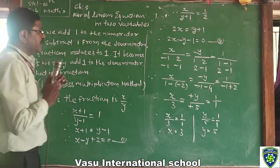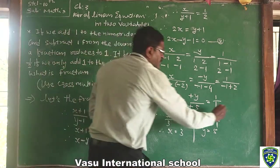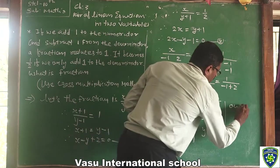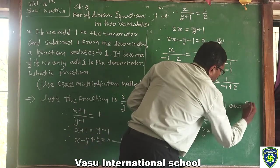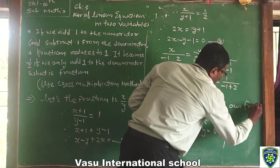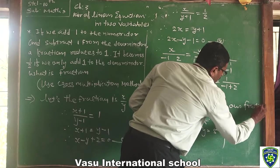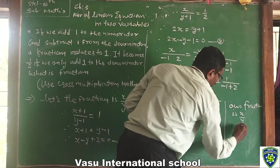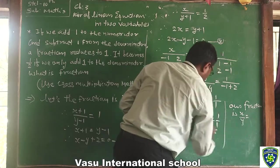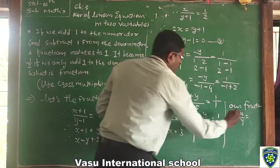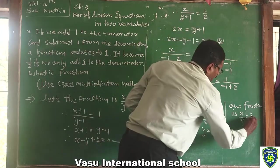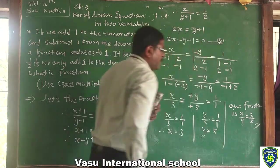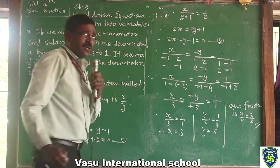So our fraction is x by y, which equals 3 by 5. That is our answer.